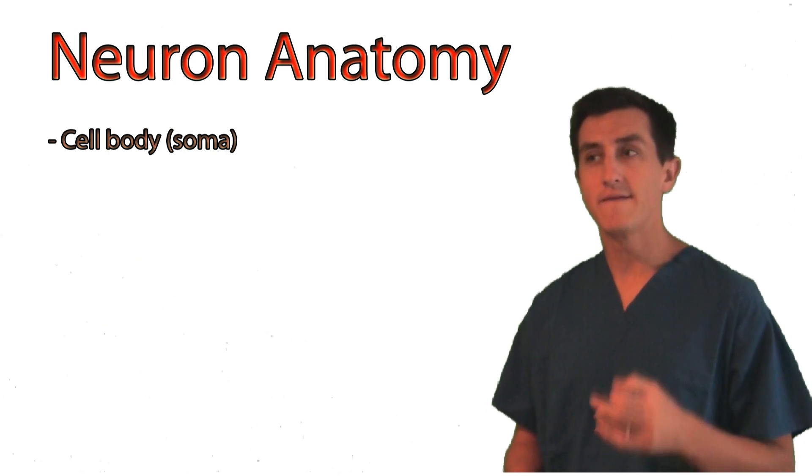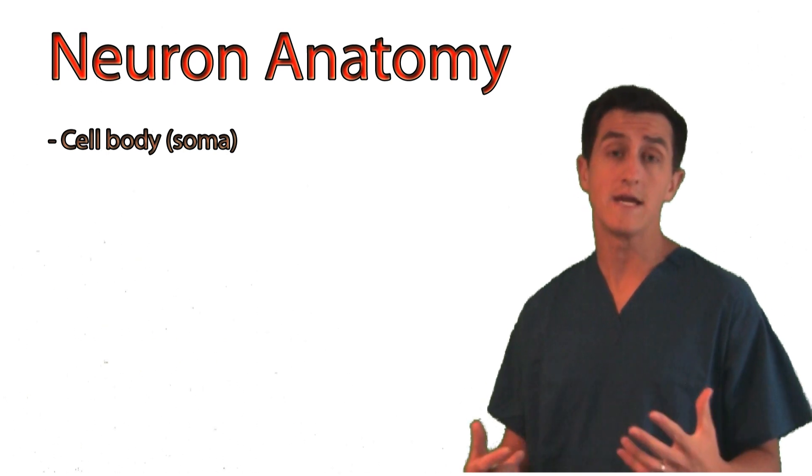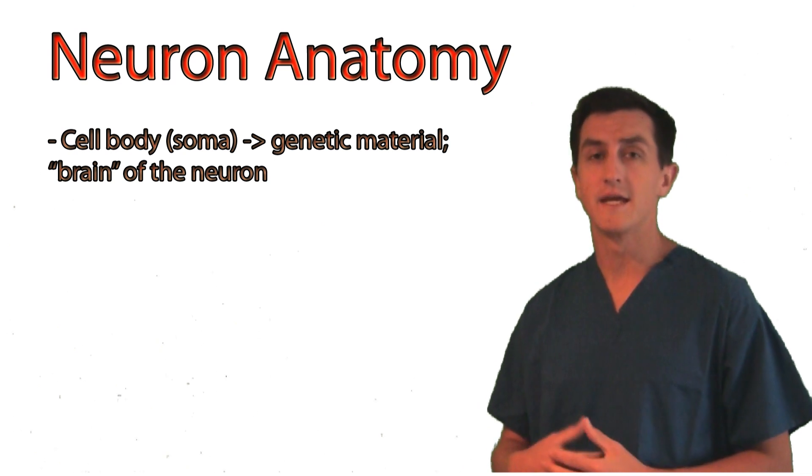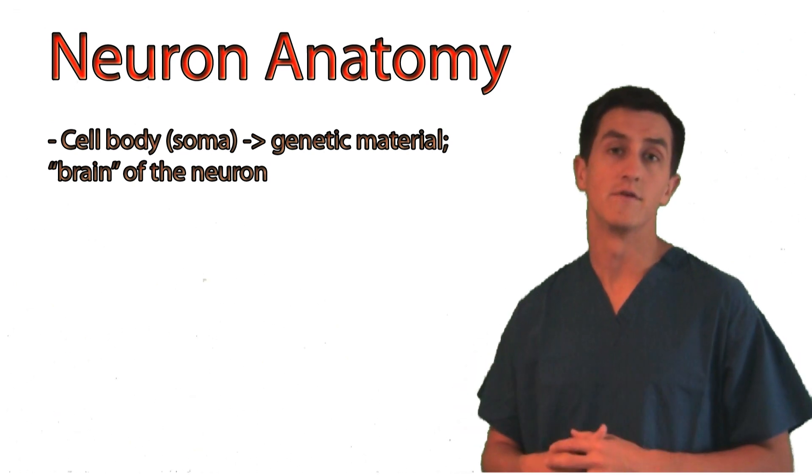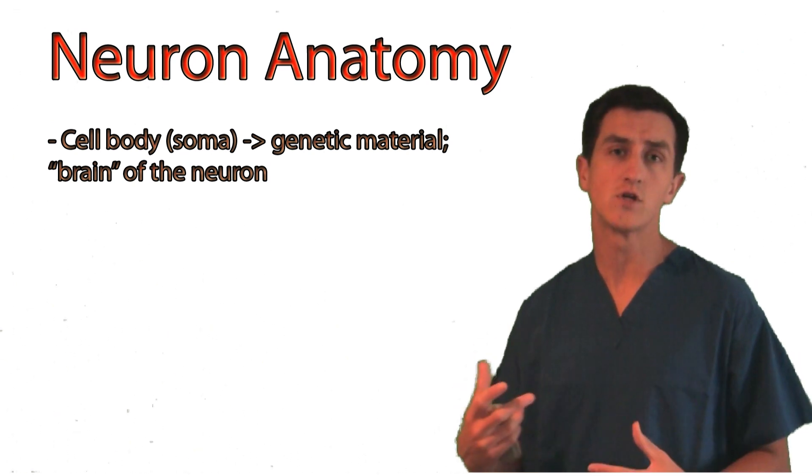The cell body, for lack of a better term, is really the brain of the neuron. It contains the nucleus which contains all the genetic information that ultimately gives rise to proteins that help the rest of the neuron perform all of its various functions.